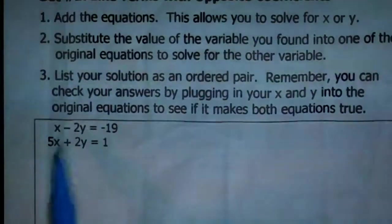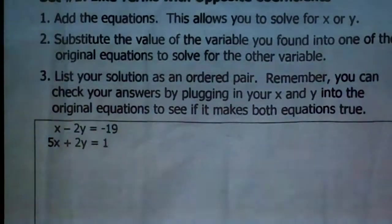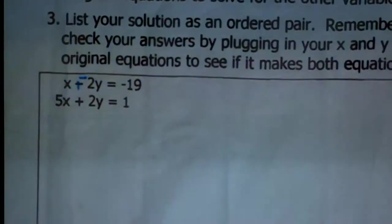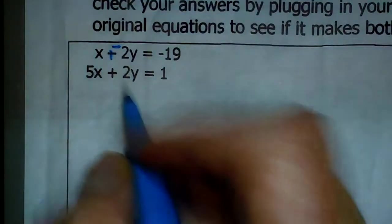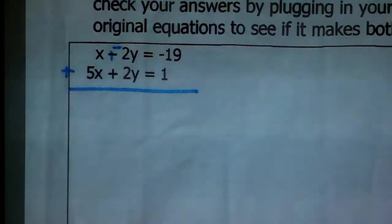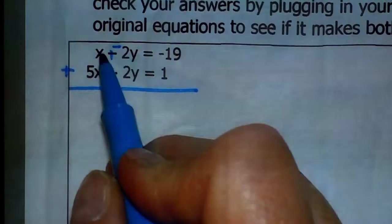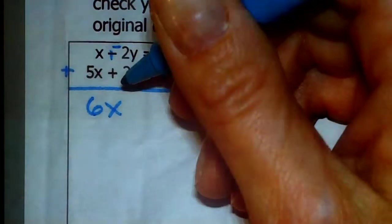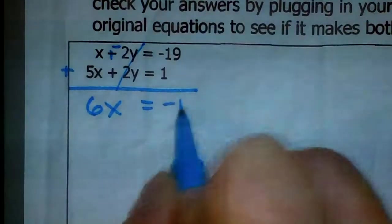Looking at this first example, I have Ax plus By equals C form. Here I'm subtracting 2y, making it negative 2y, and here I have positive 2y. So we're going to eliminate the Y's because those cancel out. When you add the equations, you can only add like terms together. X plus 5X is 6X. Negative 2y plus positive 2y gives you zero — they're gone. Then negative 19 plus 1 is negative 18, so I have 6X equals negative 18.